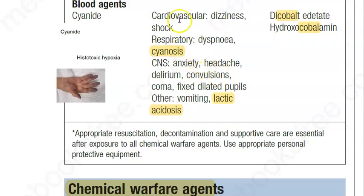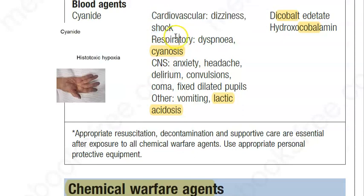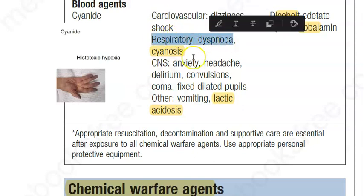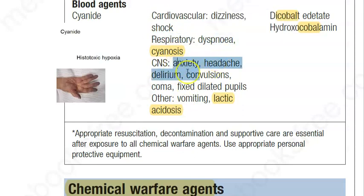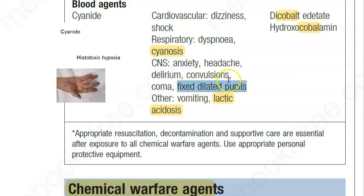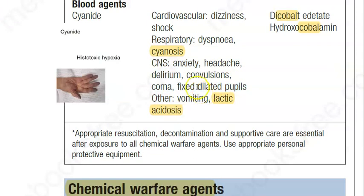Then all the standard symptoms of any poisoning: cardiovascular, dizziness, shock, respiratory dyspnea — the patient is having difficulty to breathe — anxiety, headache, delirium, convulsions, coma, fixed dilated pupils, vomiting. These are all very standard for any poison.